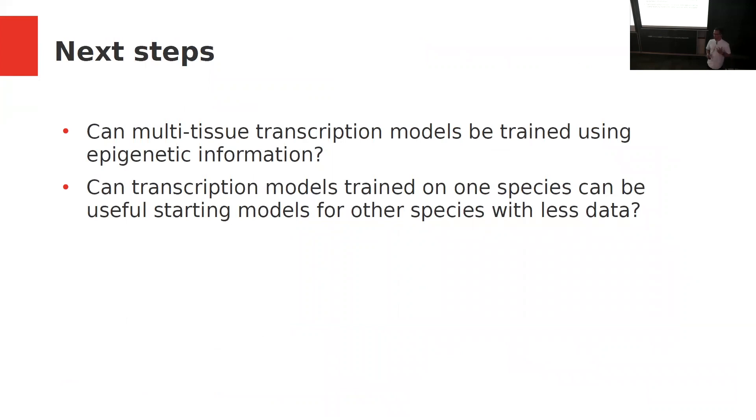The questions that I want to answer with the rest of this work is basically can these multi-tissue transcriptional models be trained with epigenetic information? Is this a good idea and will it generalize across tissues? Another question I'd like to answer is can we train models on one species, for example, Arabidopsis, and then use those as useful starting models to retrain and retune in other species to achieve similar accuracies but with less available data?